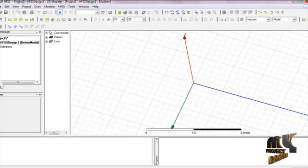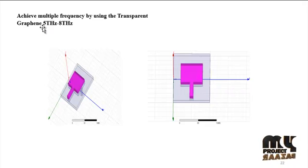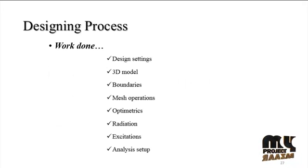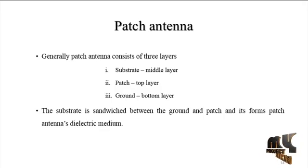This is the HFSS window. The antenna achieves active multi-frequency operation using the transparent graphene material from 5 terahertz to 8 terahertz. The overall design procedure includes: design settings, 3D model, boundaries, mesh operation, optometrics, radiation, excitation, and analysis. The patch consists of 3 layers: substrate in the middle, patch on top, and ground on the bottom. The substrate is sandwiched between the ground and patch, forming the dielectric medium of the antenna.